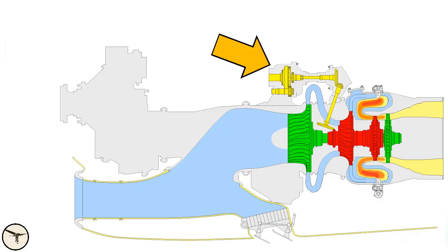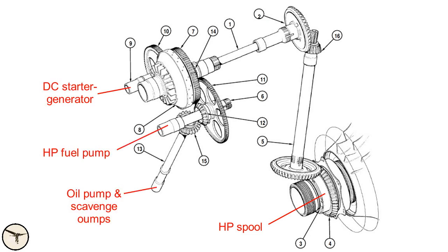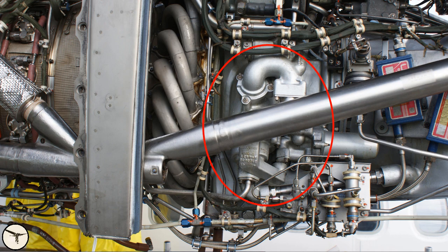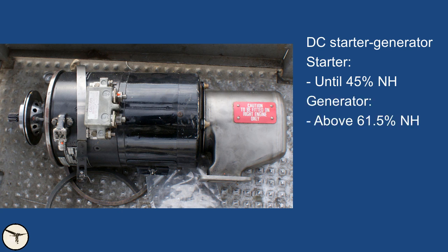The accessory gearbox is driven by the HP spool and contains drives for the DC starter generator, the HP fuel pump, the main oil pump and two scavenge pumps — all grouped in a single unit on the right-hand side of the engine. When the starter is engaged it drives the HP shaft and disengages at 45% NH, after which the engine completes the start sequence by itself. When NP reaches 61.5%, the starter generator switches to act as a generator.